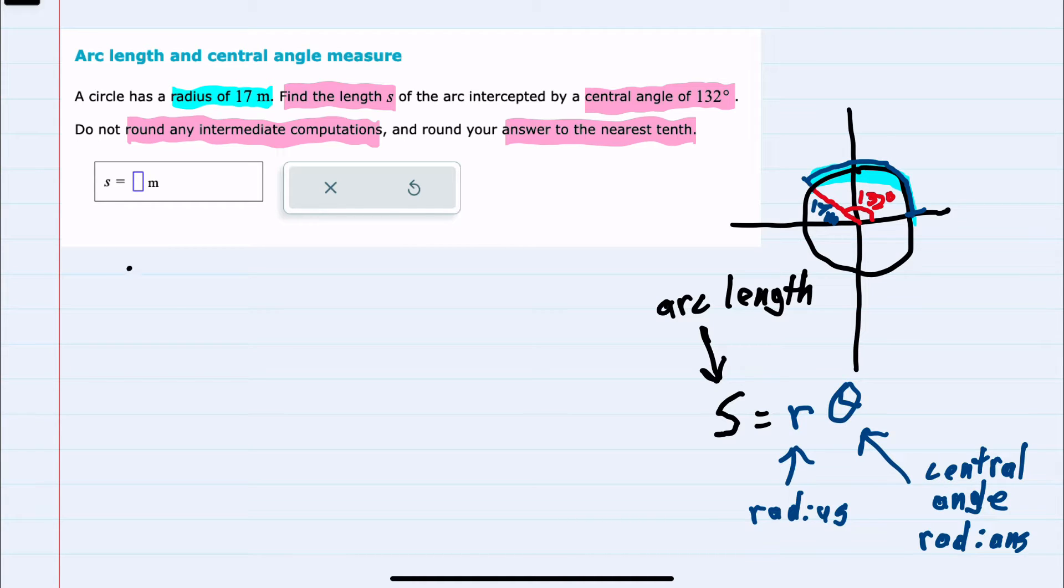we're looking for the arc length S, and we know that it's equal to the radius here, which is 17 meters. And we are multiplying the 17 meters by the central angle theta, but it has to be in radians. And we were given our central angle here in degrees.